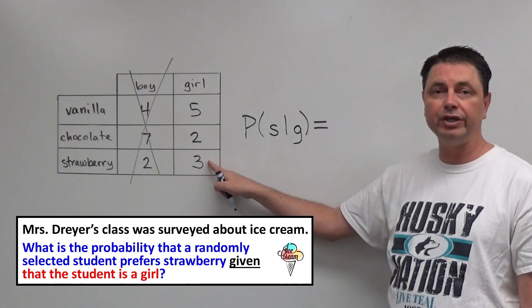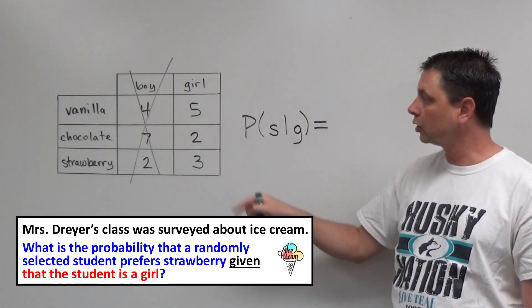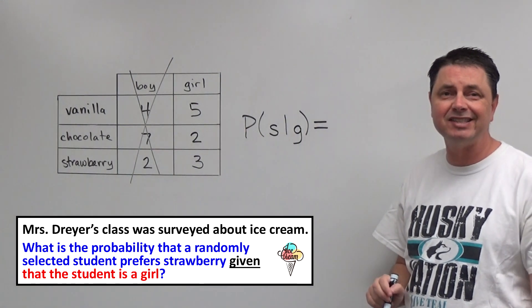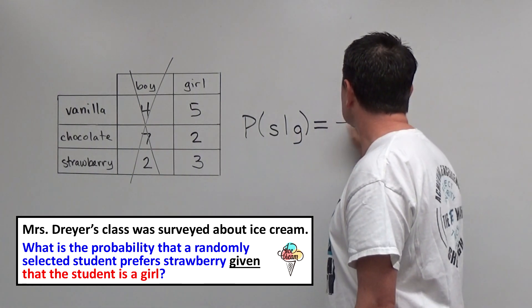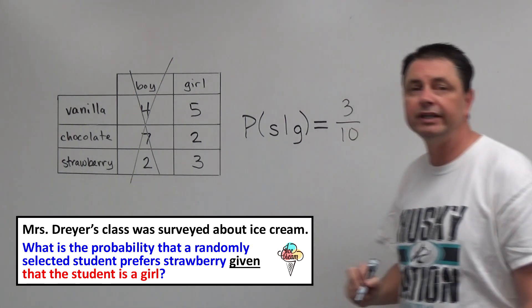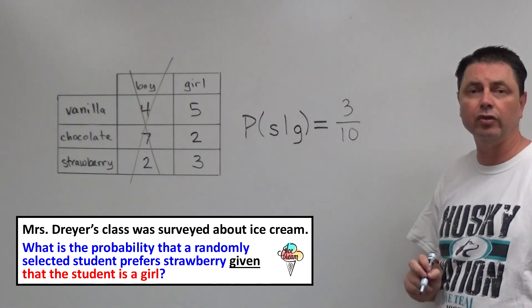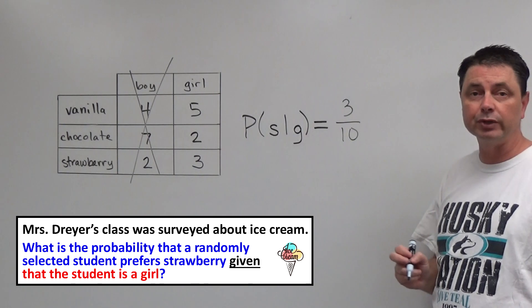So strawberry, there are three. Total number of girls, if we add it all up there, it's ten. So our probability is three out of ten or three tenths. We cannot reduce that.